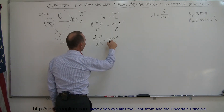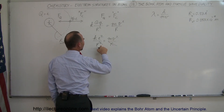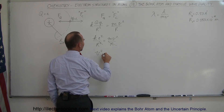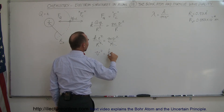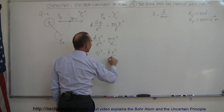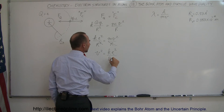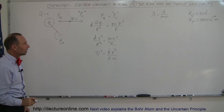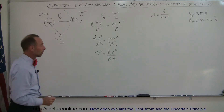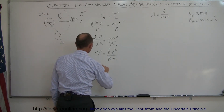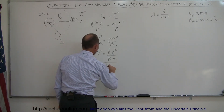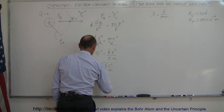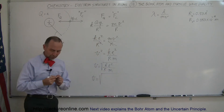Solving for v squared, we divide both sides by m and then take the square root. Let me turn the equation around: v squared is equal to k e squared divided by r, and the m goes to the denominator. So I move m to the other side of the equal sign and take the square root of both sides. Therefore, v is equal to the square root of k e squared divided by r times m. Now let's plug in the numbers.